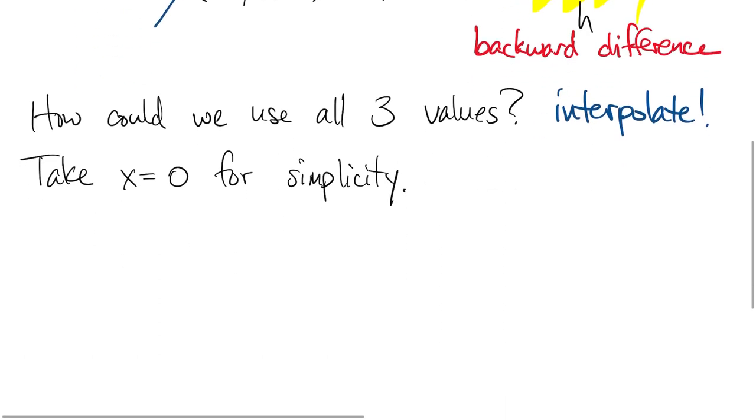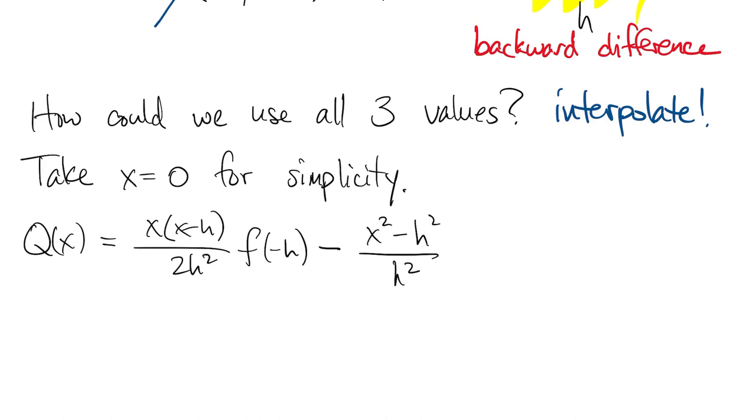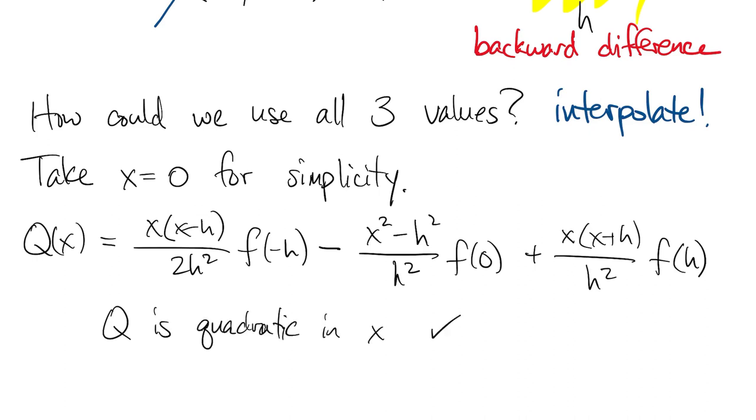Then we can write out q, the polynomial interpolant for the three points we've referred to so far. I won't say how we get this, but you can see that q is a quadratic function of x, and you can check that it interpolates the three points.